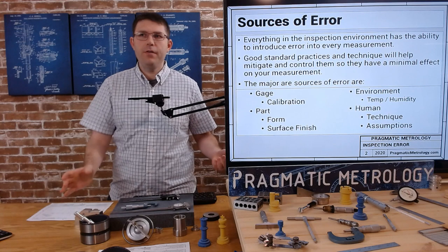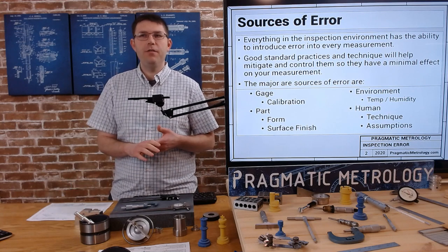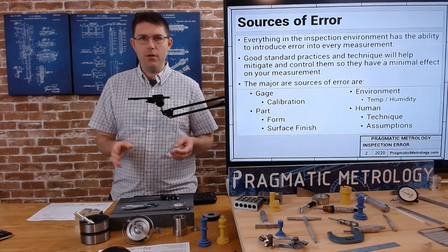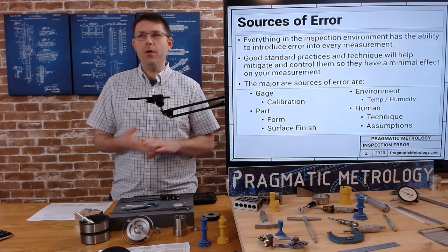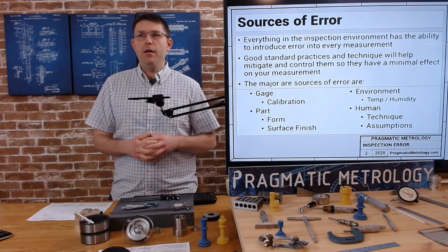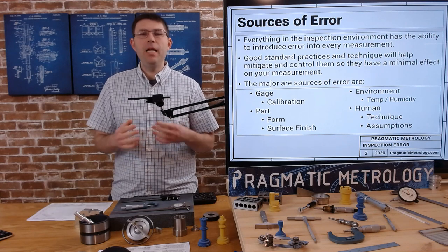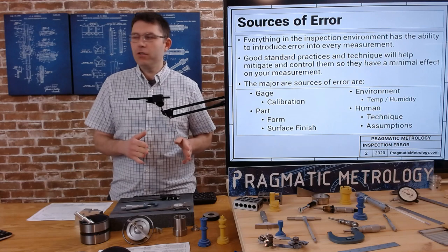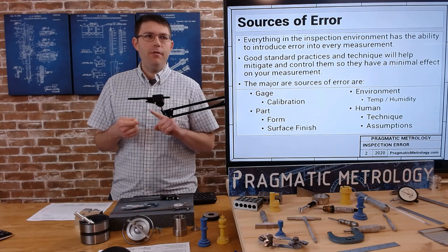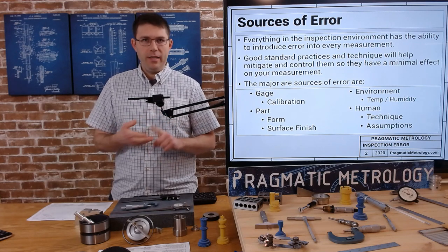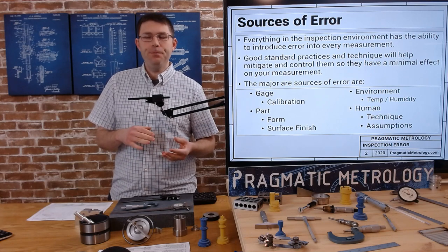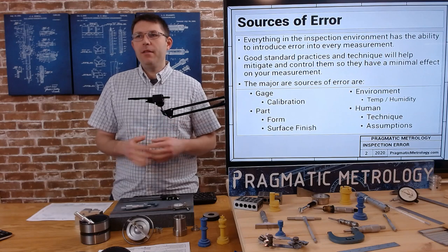Everything in the inspection environment has the ability to introduce error into every measurement - the environment, the person, the gauge, the part. But if you have good standard practices and techniques that will help you mitigate and control them so they have a minimal effect on your measurement. It's important to have a good technique, a standard approach, a standard method, so that everything you're doing is repeatable on some level.